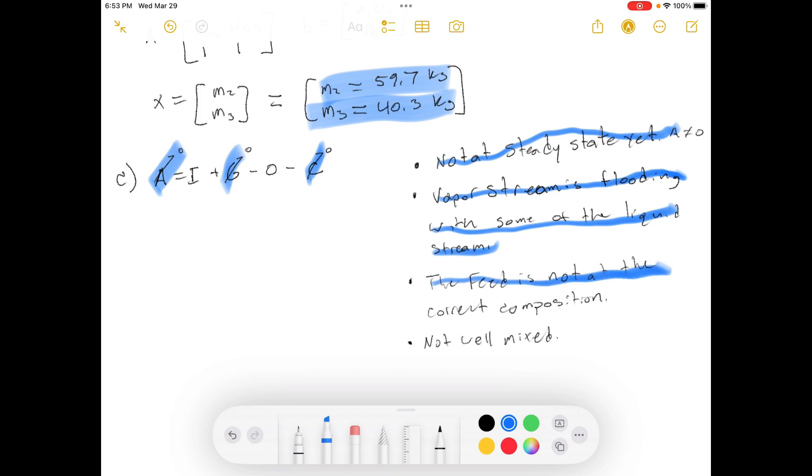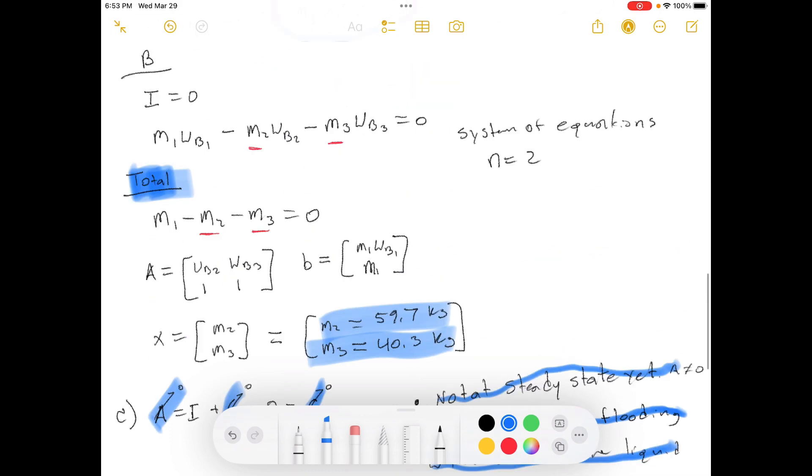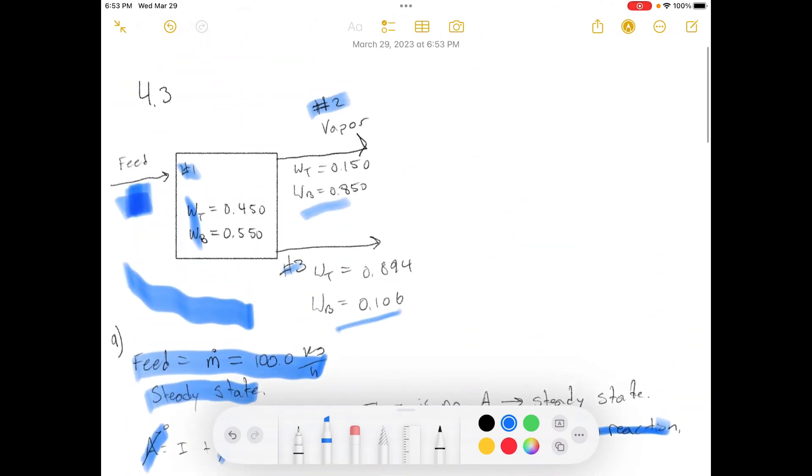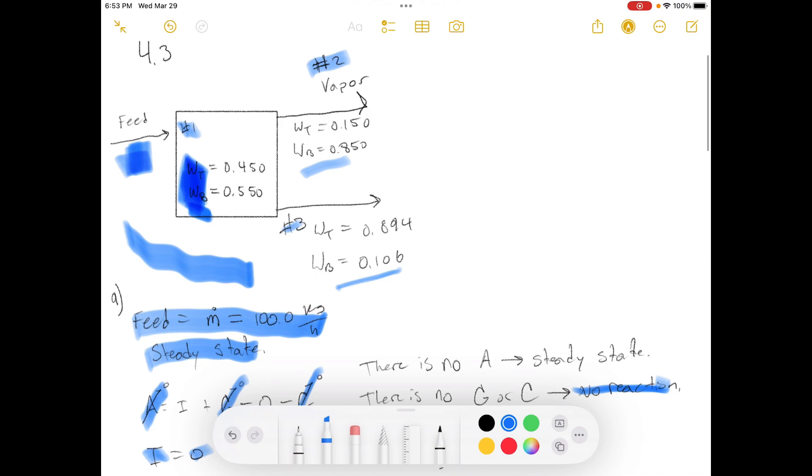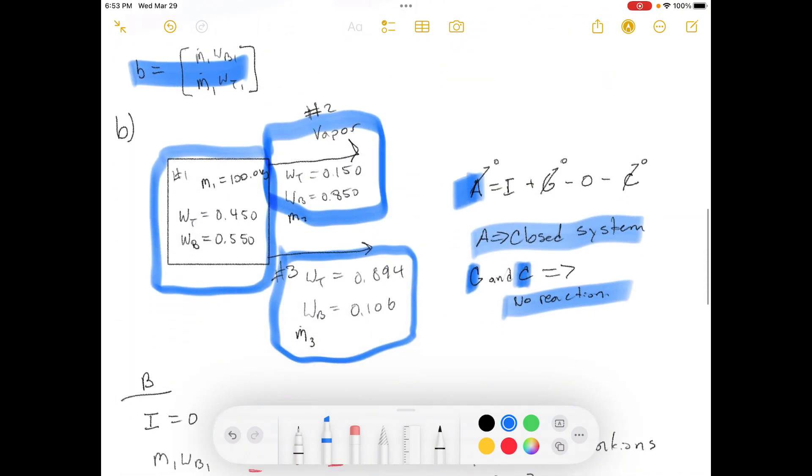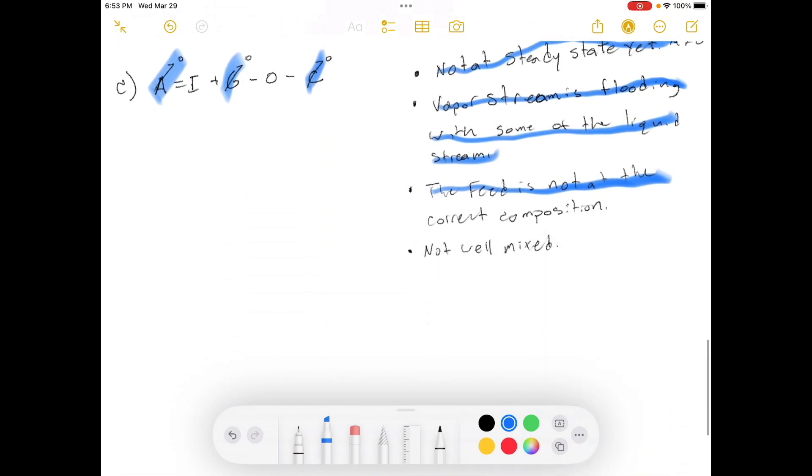We'd say the feed is not at the right composition. So, let's say you thought you were starting off with a feed of this composition, but in reality, it's actually something else. Maybe your feed has been contaminated. Maybe there's a third component in here that's messing with your results, or maybe these results are not in the correct ratio, or components are not in the correct ratio.